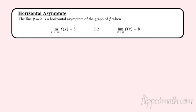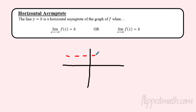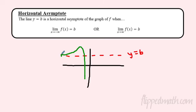That's the horizontal asymptote. The formal definition: a horizontal asymptote occurs when, as x goes to positive or negative infinity, the function approaches some constant value b — meaning the line y equals b. They don't have to match in both directions, but often they do. The function can even cross a horizontal asymptote in the middle — that's totally fine. Good luck on the practice and the mastery check!